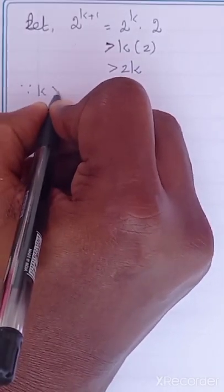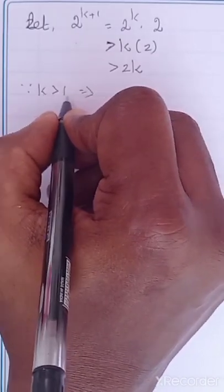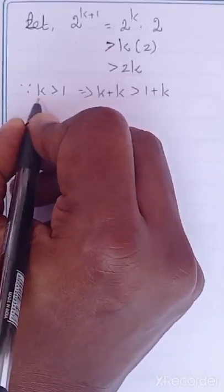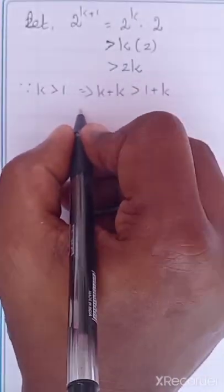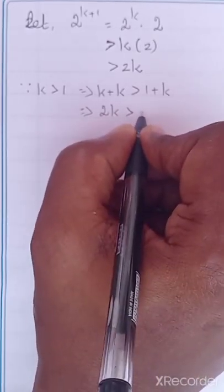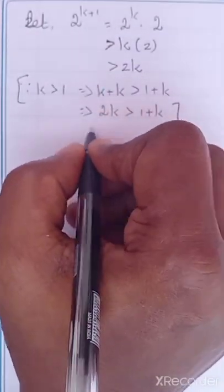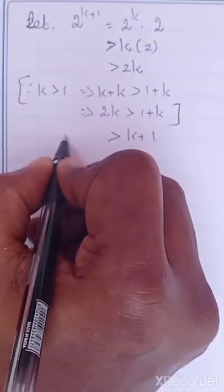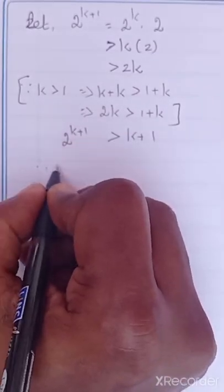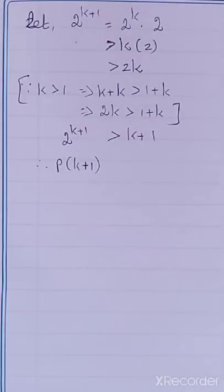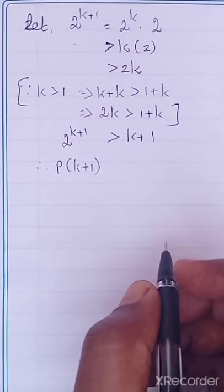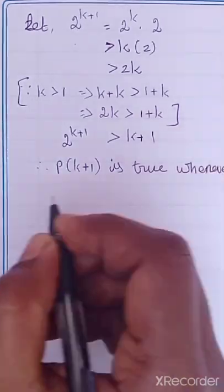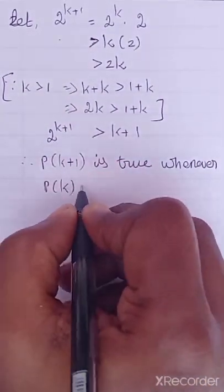Since K is greater than 1, adding K to both sides gives K plus K greater than 1 plus K, that is 2K greater than 1 plus K, which is K plus 1. So using this, 2 power K plus 1 is greater than K plus 1. Therefore we can conclude that P of K plus 1 is true whenever P of K is true.